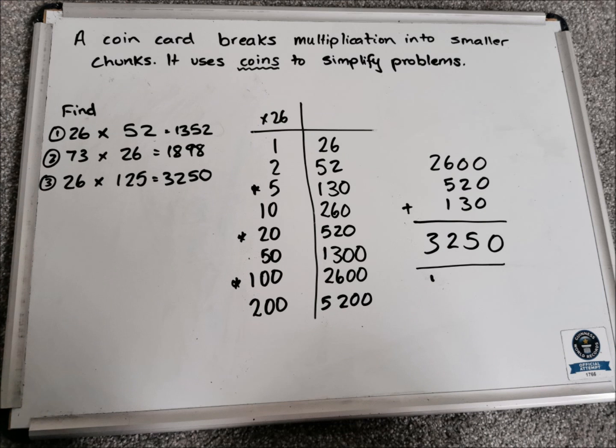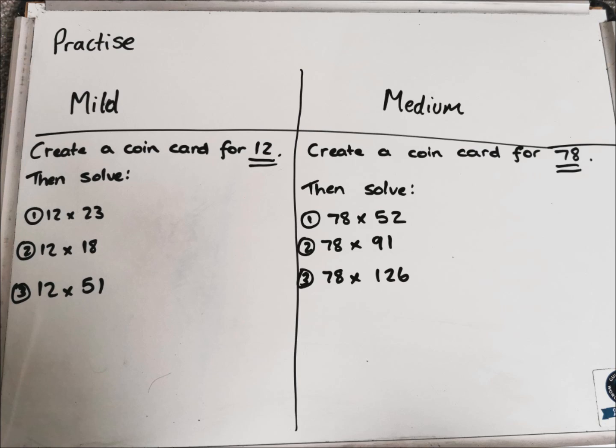What I've got for you now is some practice. I've got a mild and I've got a medium. Mild keeps it simple, just creating a coin card for 12 and then some problems for you to solve. Medium is a little bit more tricky — we're making a coin card for 78 and then some problems to solve. So pause the video here and work your way through these problems.